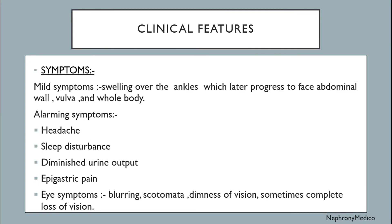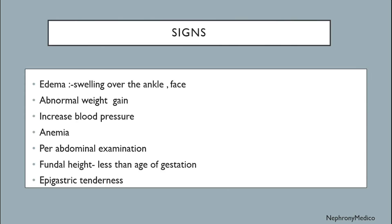Clinical features and symptoms: There may be mild symptoms like swelling over the ankles which later extends to the face, abdominal wall, vulva and whole body. Or there may be alarming symptoms like headache, sleep disturbance, diminished urine output, epigastric pain, eye symptoms like blurring, scotoma, diminished vision, or complete loss of vision. Signs include edema — swelling over ankles or face — abnormal weight gain, increased blood pressure, and anemia.